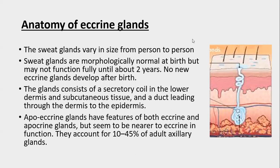Regarding the anatomy of eccrine glands: sweat glands vary in size from person to person. All sweat glands develop at birth and after birth there is no new eccrine gland development. The sweat glands are morphologically normal at birth but may not function properly until two years of age. The gland consists of a secretory coil in the lower dermis and subcutaneous tissue, and a duct leading through the dermis and epidermis. The apocrine glands have features of both eccrine and apocrine glands but seem nearer to the eccrine gland in function, and are mainly present in the axilla, contributing about 10 to 45 percent of the axillary glands.